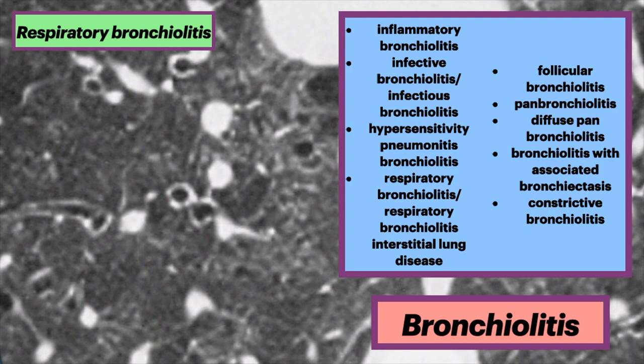Here is a CT example in a smoker with RB (respiratory bronchiolitis), showing centrolobular nodules, ground glass opacities, bronchial wall thickening, and centrolobular emphysema. Typically, respiratory bronchiolitis can occur in an asymptomatic patient.